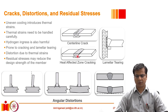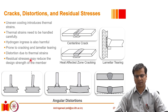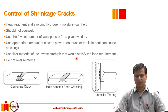Even if we prevent cracking and distortion by restraining members, there is still a significant possibility of developing residual stresses that will reduce or affect the design strength. We need to be mindful of residual stresses. In general, the cause of shrinkage cracks or excessive distortion is poor heat management, and some precautions have to be taken.